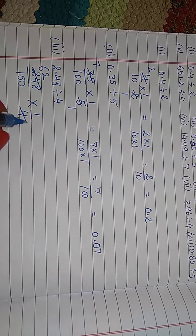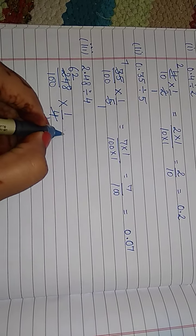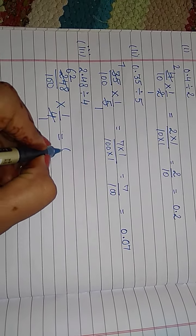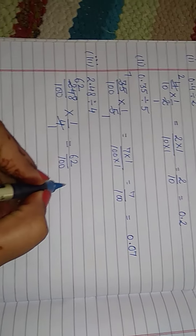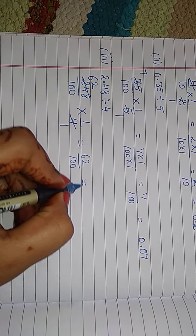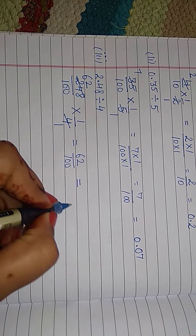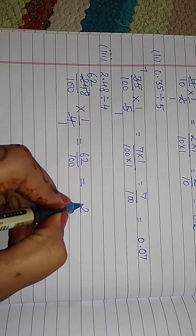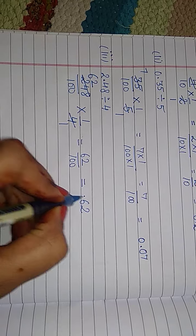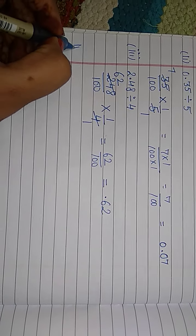Answer is 62 by 100. Or you can write in decimal form. Here, 100. So, after 2 digits, put decimal.